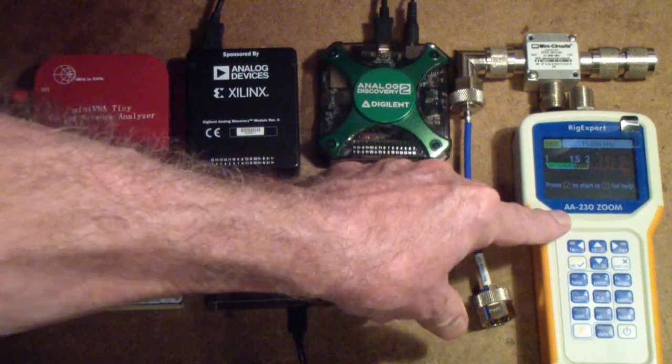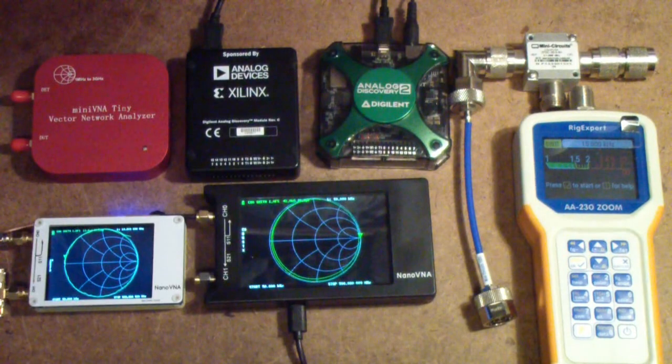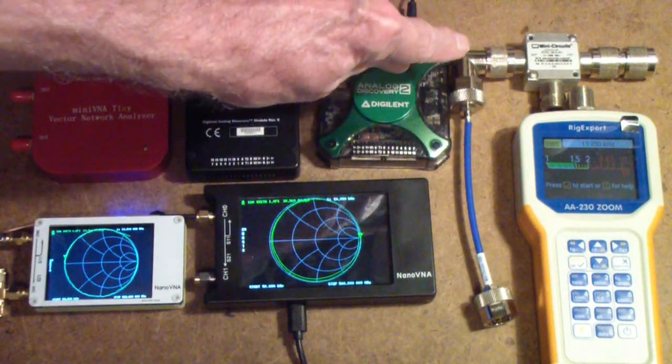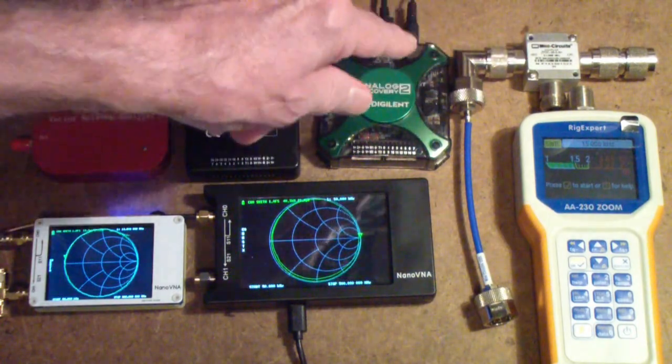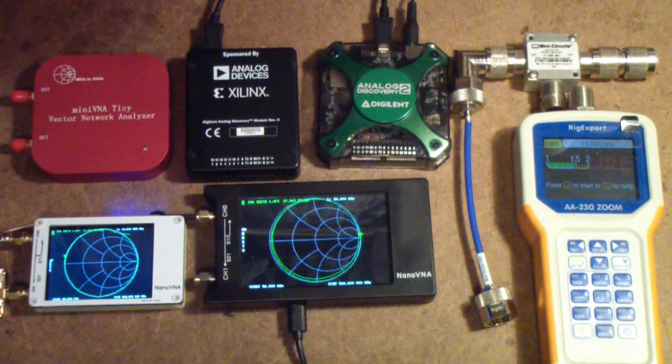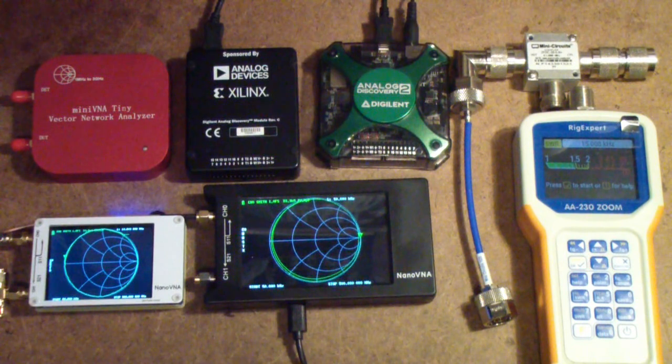Next to that is a Rigexpert AA-230. And I'm not sure whether I've done videos on that, but W2AEW has many. And up here is a Mini-Circuits SWR, the way it's hooked up is an SWR setup for a spectrum analyzer.